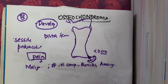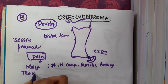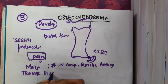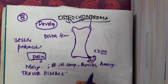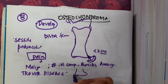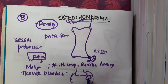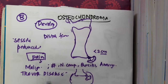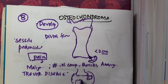There is a disease called Trevor's disease. Trevor's disease is actually an intraarticular epiphyseal osteochondroma — that is, when the osteochondroma is located inside the articular cartilage. It is called Trevor's disease.